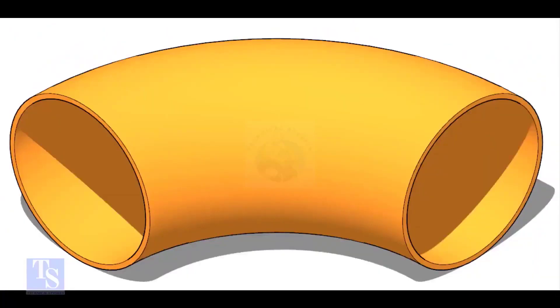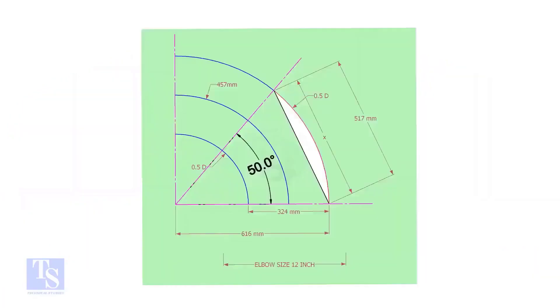This is a 12-inch long radius elbow. Let us mark a 50-degree elbow on it. Let us draw a simple layout of the elbow.